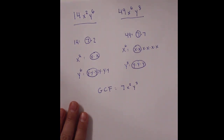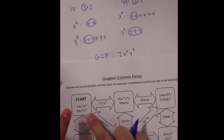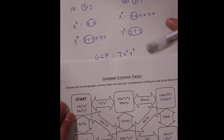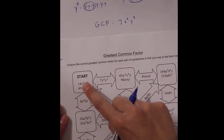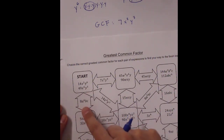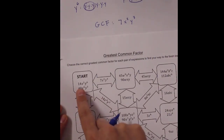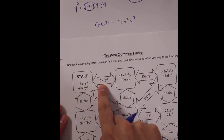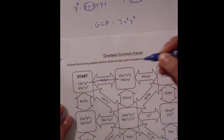We're just identifying the GCF for now, not factoring it out yet. Back on the maze, we're looking at three options coming out of box one. One option has a's and b's which don't match — our expressions have x's and y's. Another option has 14, but we figured out that 14 doesn't go into 49; only 7 does. So it has to be 7x²y³. You draw across to box two and repeat this process to find your way through the maze.